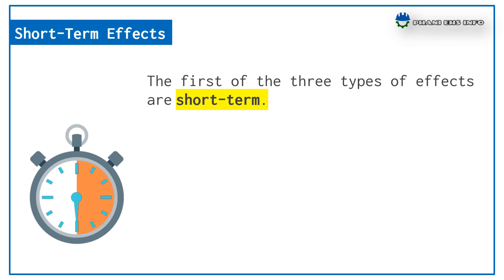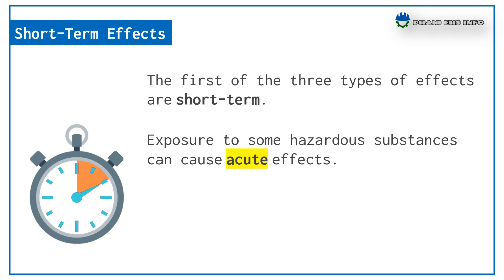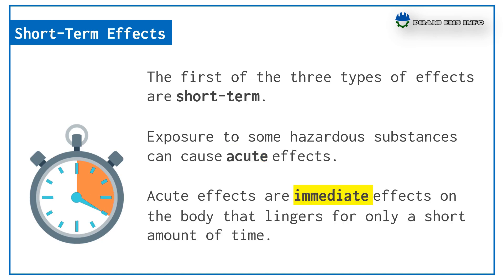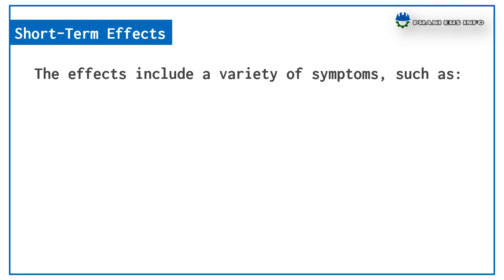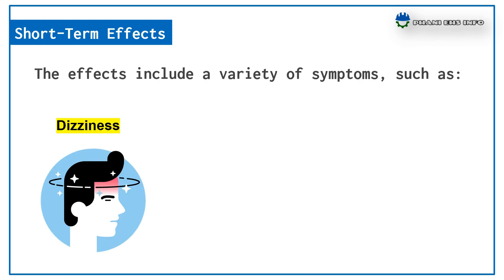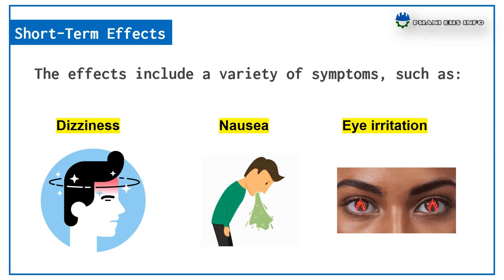The first of the three types is short-term effects. Exposure to some hazardous substances can cause acute effects, or short-term effects. Acute effects are immediate effects on the body that linger for only a short amount of time. The effects include a variety of symptoms such as dizziness, nausea, and eye irritation.